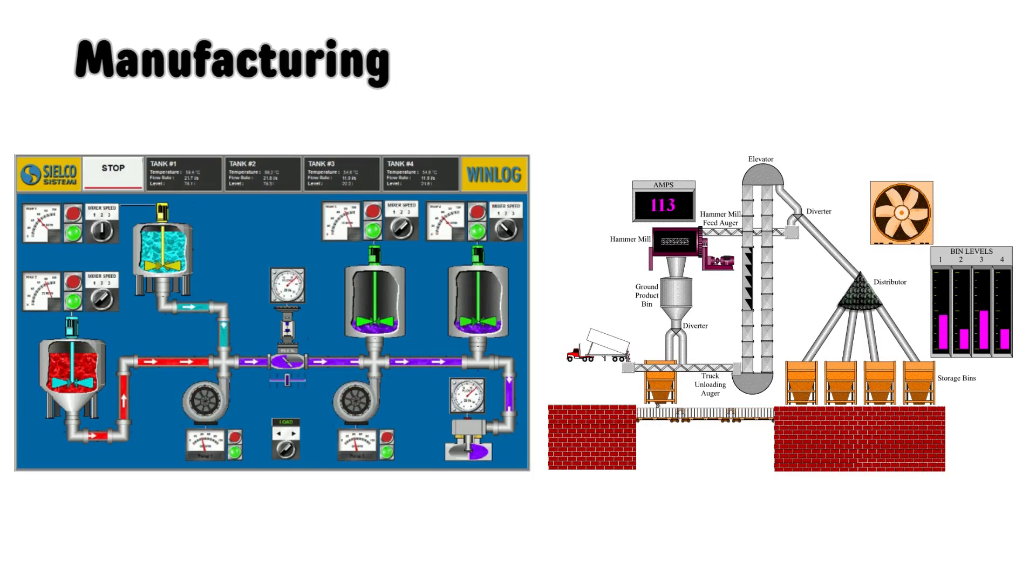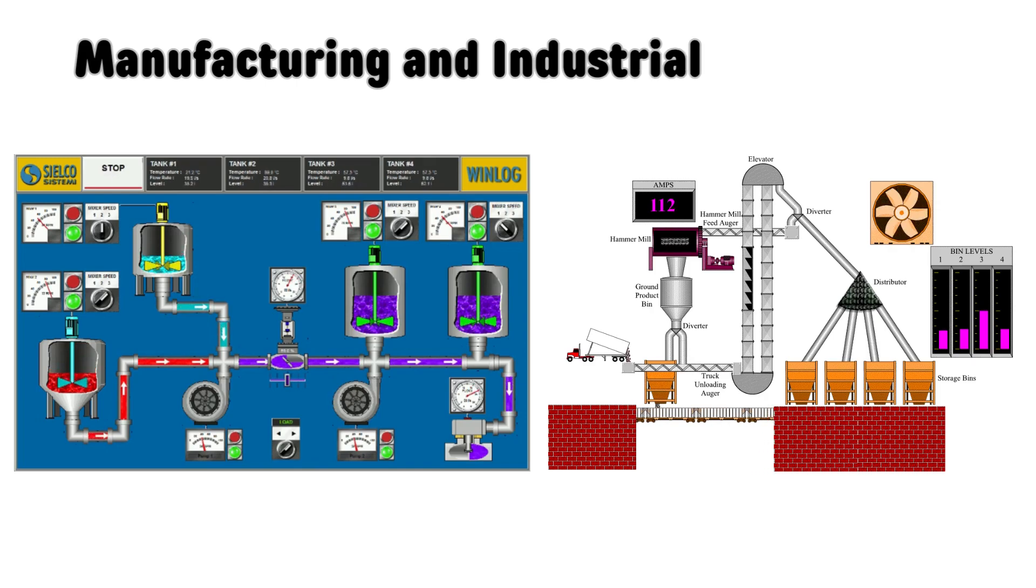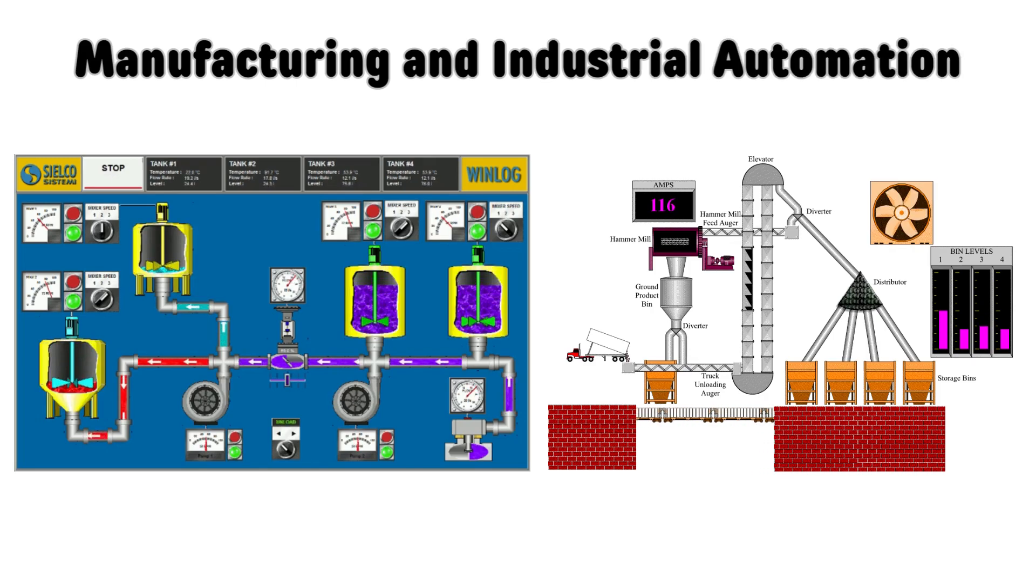Manufacturing and Industrial Automation. SCADA systems are extensively used in manufacturing plants to monitor and control production processes, such as assembly lines, robotic systems, and material handling. They enable real-time monitoring of machine performance, process variables, and production metrics, facilitating efficient production management and optimization.